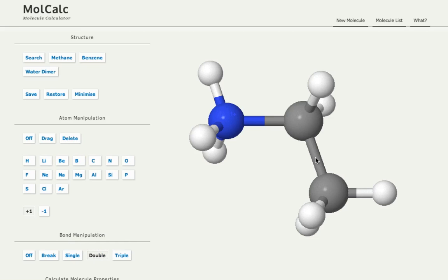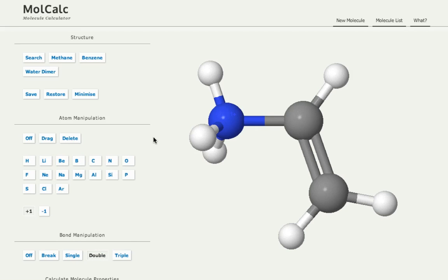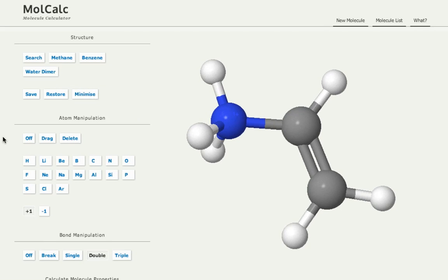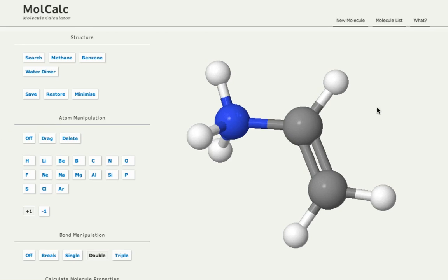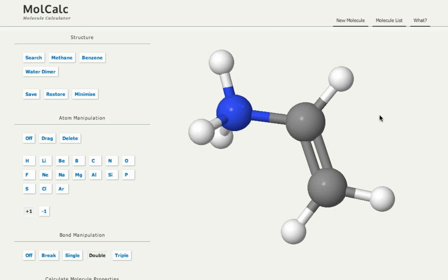and I can change the bond order to, for example, a double bond. And I can clean up the structure a little bit here by minimizing it, and now I'm ready for a calculation.